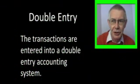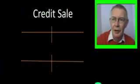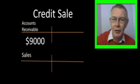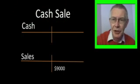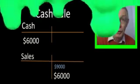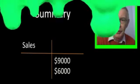These transactions have to be entered as double entries to the accounting system. The credit sale is entered as a debit of $9,000 to accounts receivable and a credit of $9,000 to sales. The cash sale is entered as a debit of $6,000 to cash and a credit of $6,000 to sales. So both sales have been recorded as revenue earned — this is accrual-based accounting.